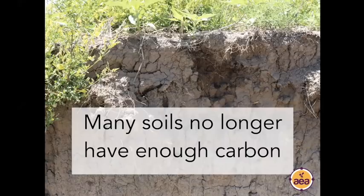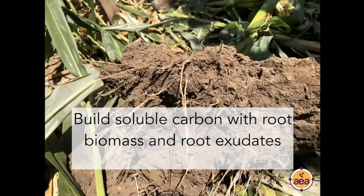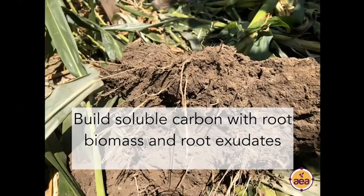When thinking about developing soluble carbon in the soil profile, the question is: how do we put more food in the soil for soil biology? The key to building soluble carbon is by harnessing the photosynthetic energy of plants. We can do this with cover crops and also with the crops we're already producing. Specifically, the fastest way to build soil organic matter is with root exudates and root biomass. You can also do this with above-ground crop biomass, but root exudates and root biomass are the fastest and most effective.